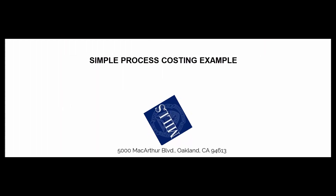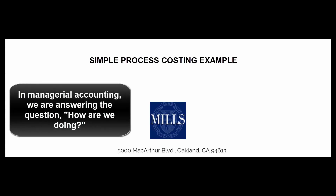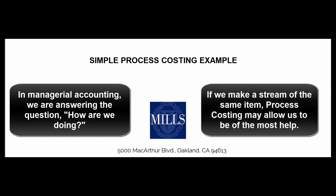There's no rule that says we have to use job order costing or we have to use process costing. But in managerial accounting we're answering management's question: how are we doing? If we make a lot of the same thing — soft drinks, electricity, or bowling balls that are exactly the same — making a steady stream of identical stuff means process costing may be the most helpful approach.